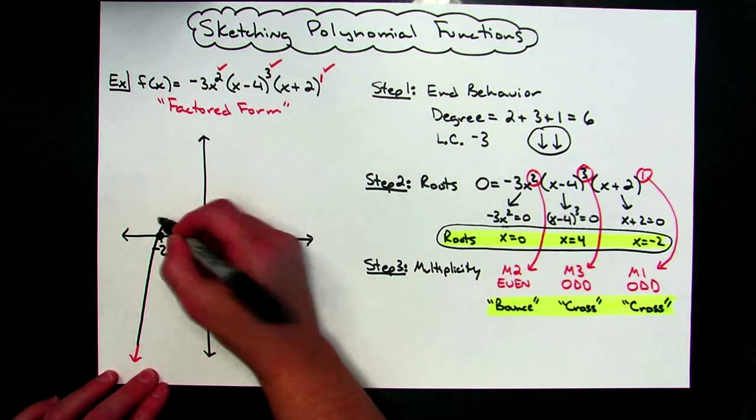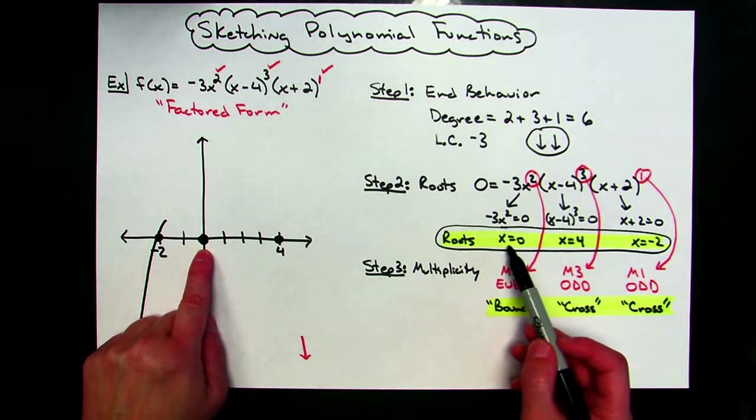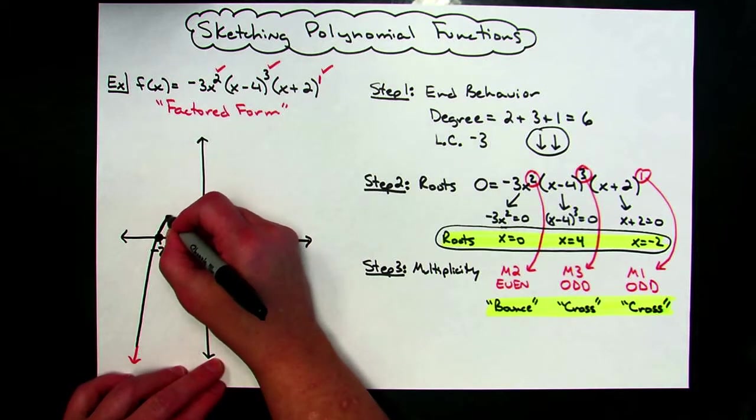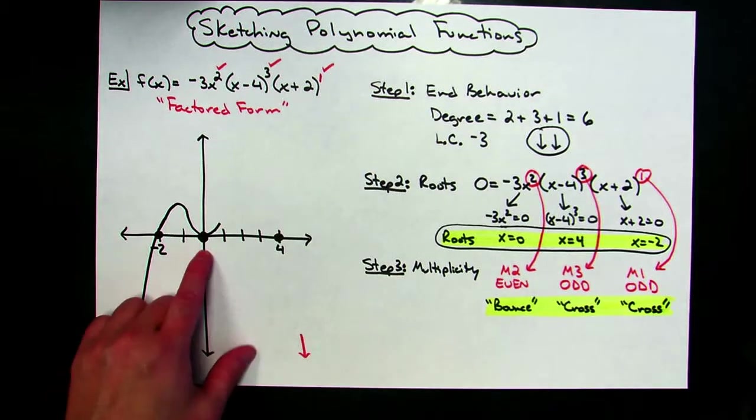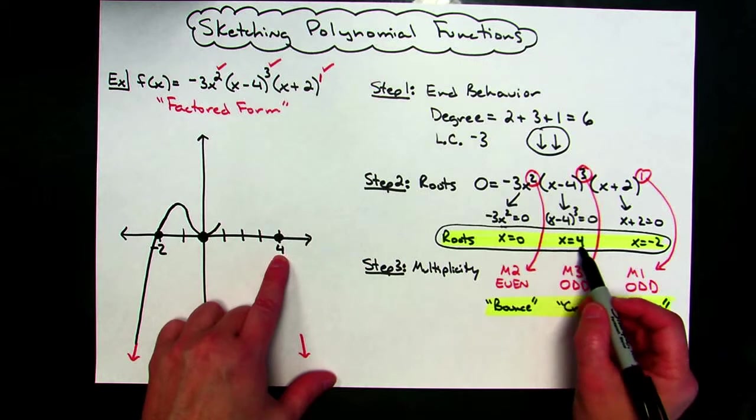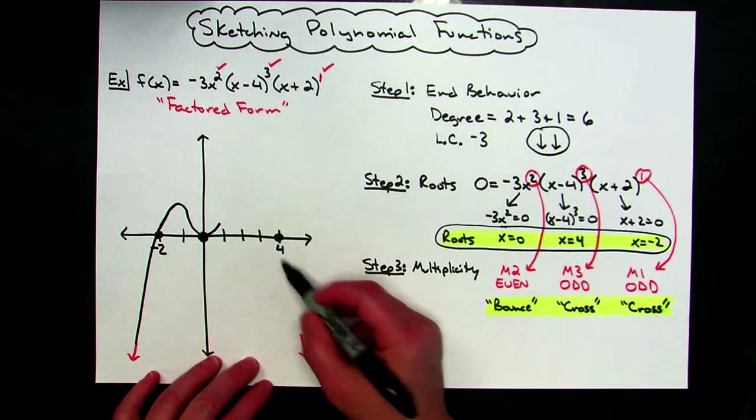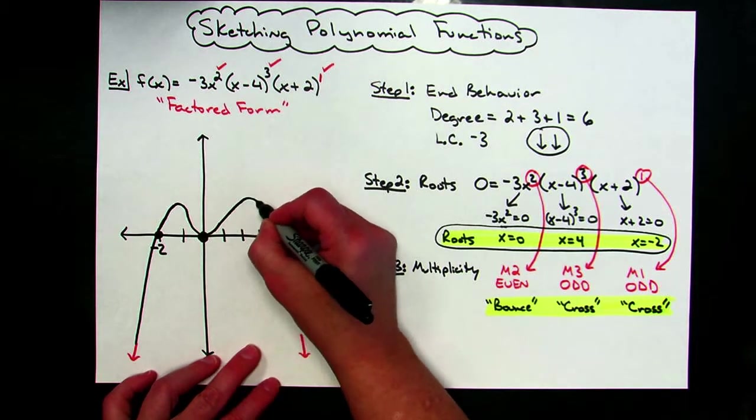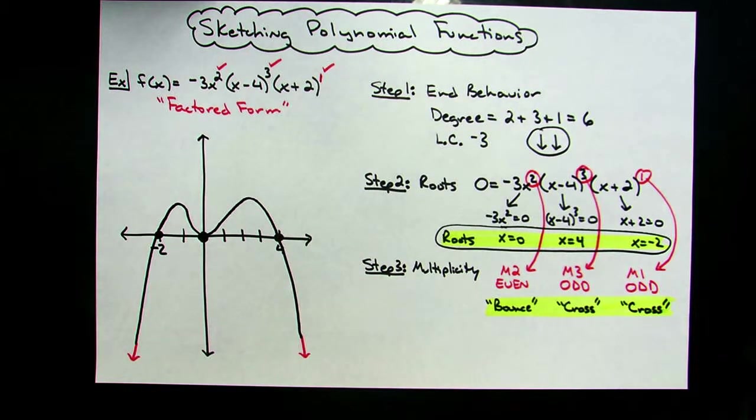All right, my next root is zero, which is right here, and it's telling me I have to bounce. All right, now, I don't know how high I'm going to go up and just do a rough sketch, but obviously I've got to go up, come back down so that I can bounce right there at x equals zero. All right, now, last root is at x equals four, and my multiplicity tells me I have to cross. All right, well, so the only way to cross to get coming back down here, I've got to come up here. I don't know how high. I'm just going to do a rough sketch, cross there at x equals four, and then I'm going to come down, and I will have my end-to-end behavior.